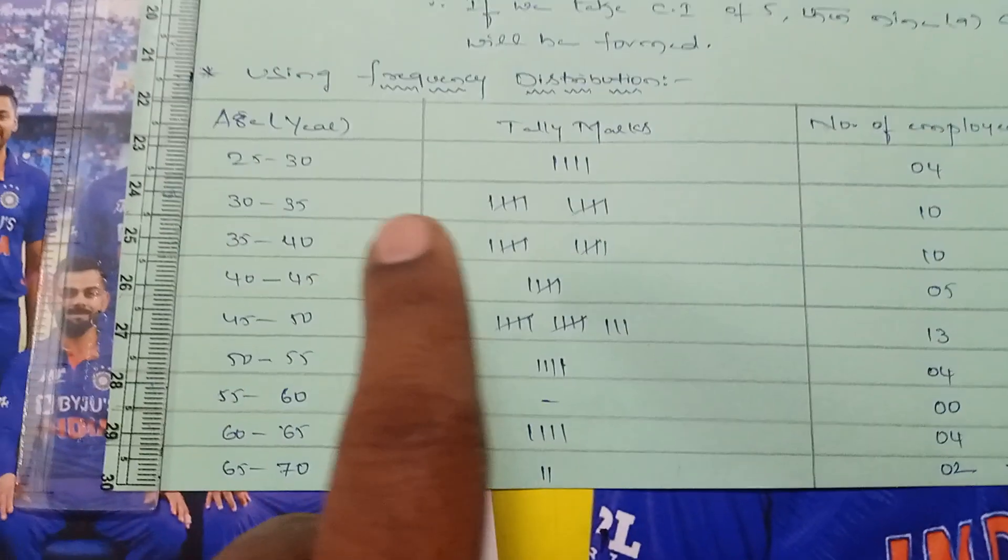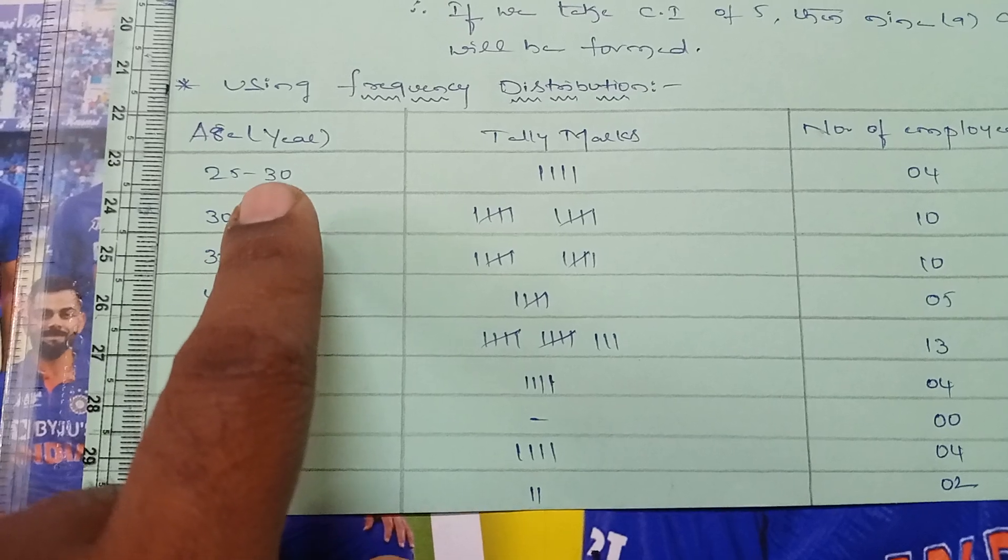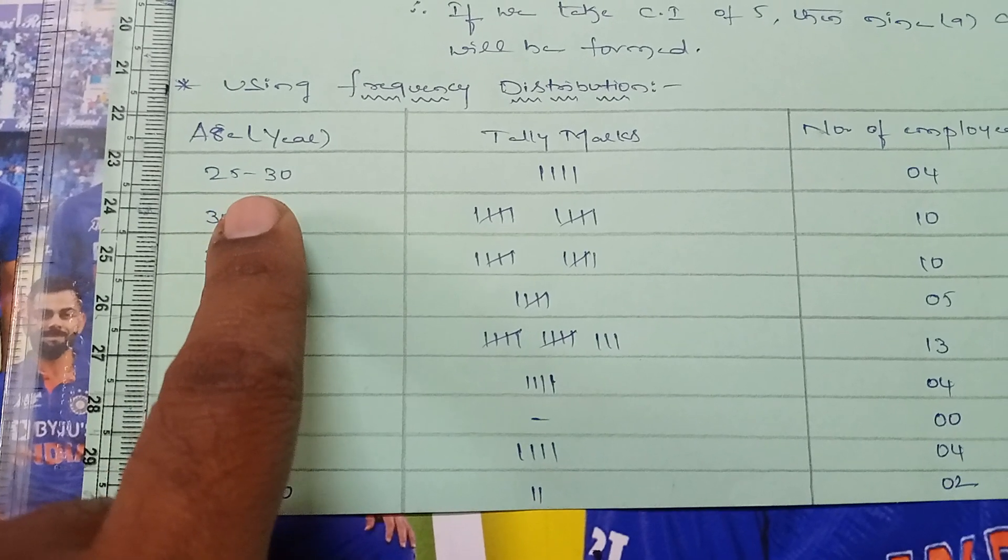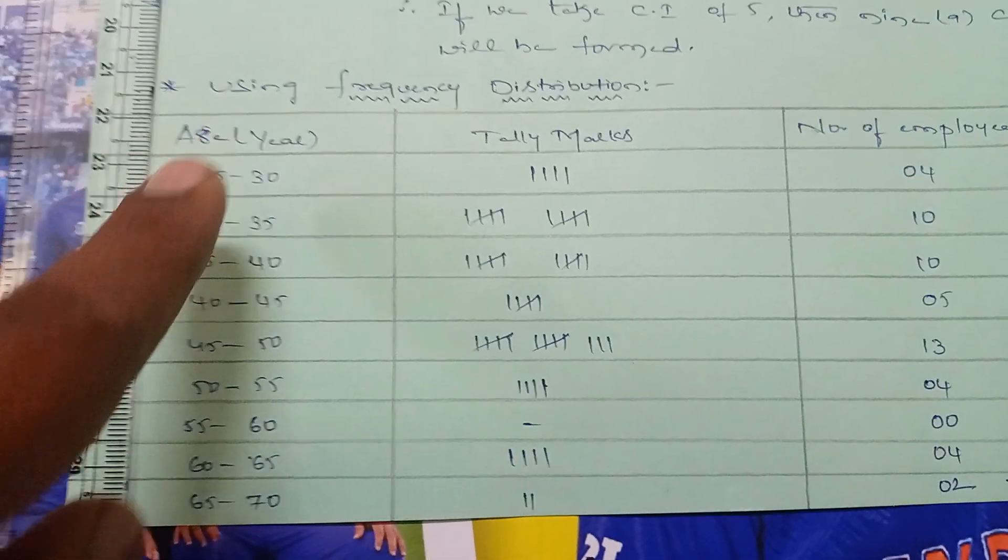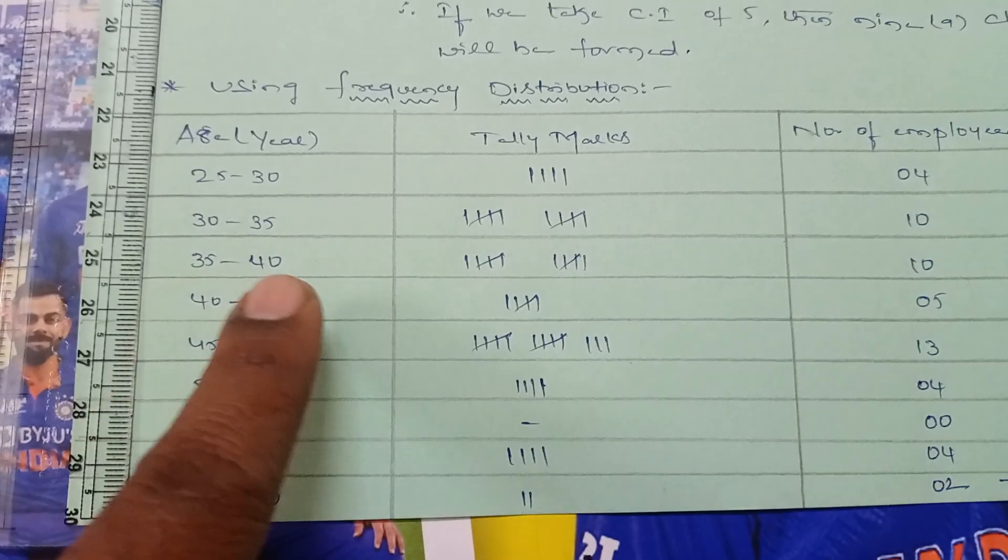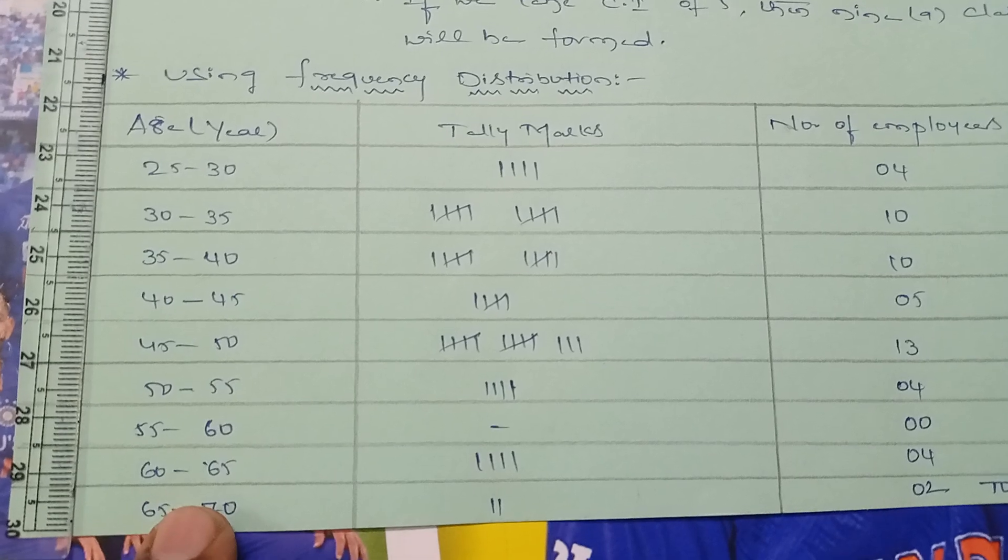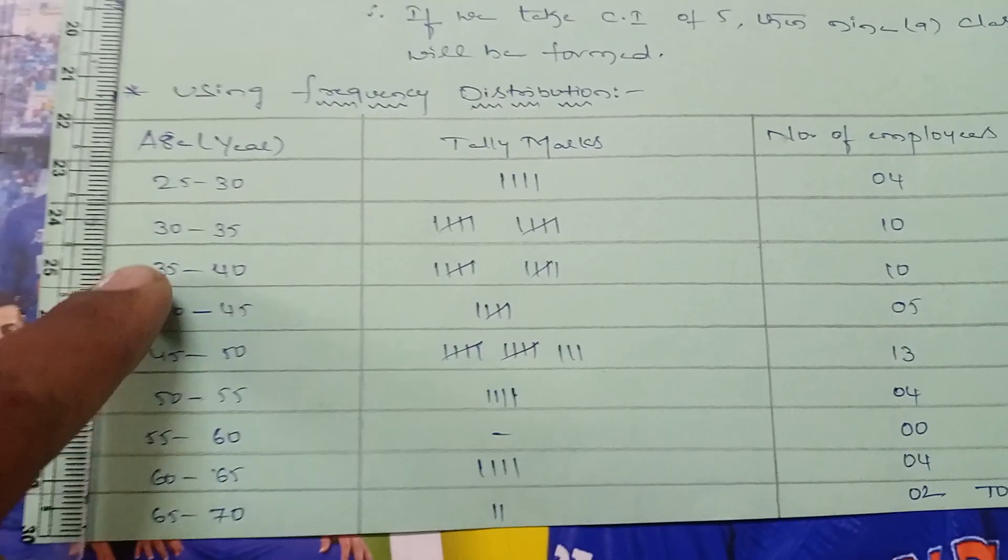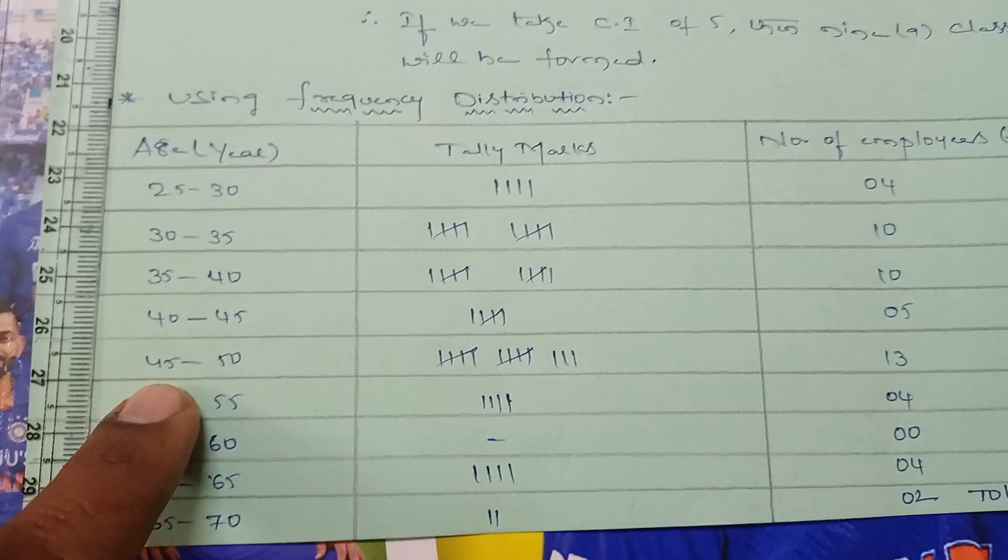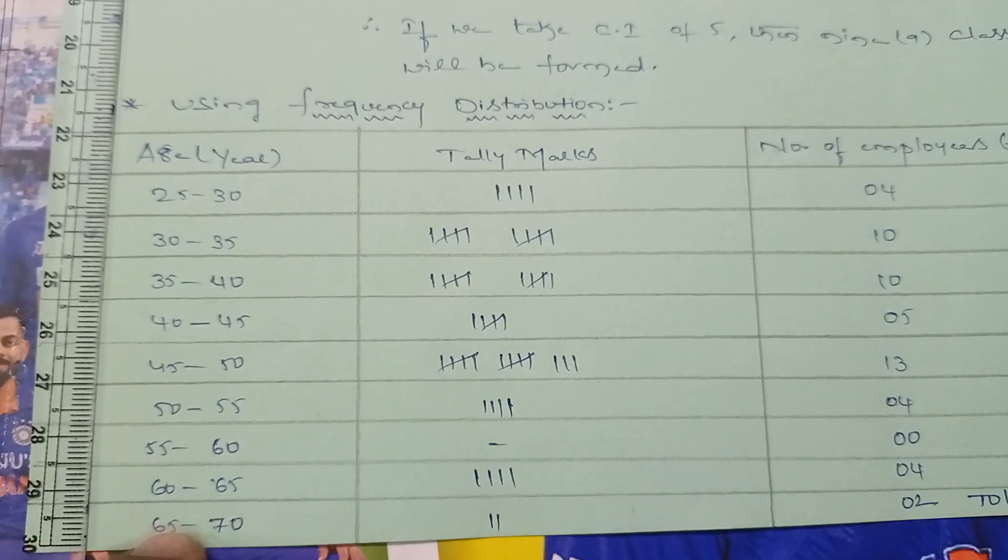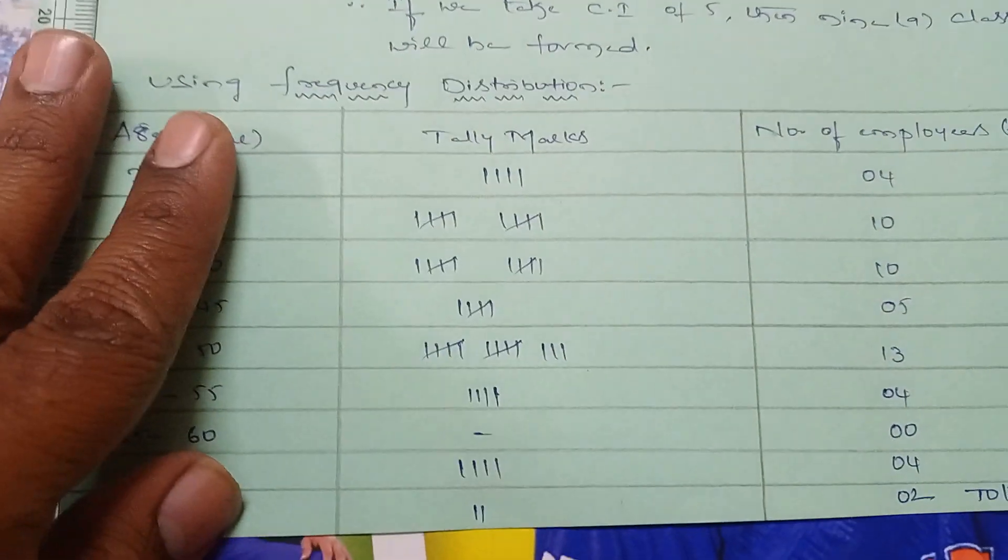We took a 5 gap, so start from 25 to 30, 30 to 35, 35 to 40, 45 to 50, up to 65 to 70. Total we have 9 class intervals, 1, 2, 3, 4, 5, 6, 7, 8, 9, and the difference is 5.